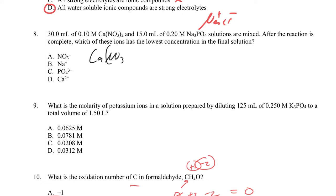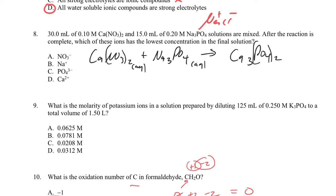We have calcium nitrate reacting with sodium phosphate — a metathesis reaction. These are aqueous salts dissolved in water. Calcium phosphate, Ca₃(PO₄)₂, is insoluble in water — we know this from the solubility chart, as most phosphates are insoluble and calcium is not an exception. The byproduct is sodium nitrate, which is water soluble (aq). To balance, we need three calcium nitrates, giving six nitrates, six NaNO₃, two sodium phosphates, and one calcium phosphate.